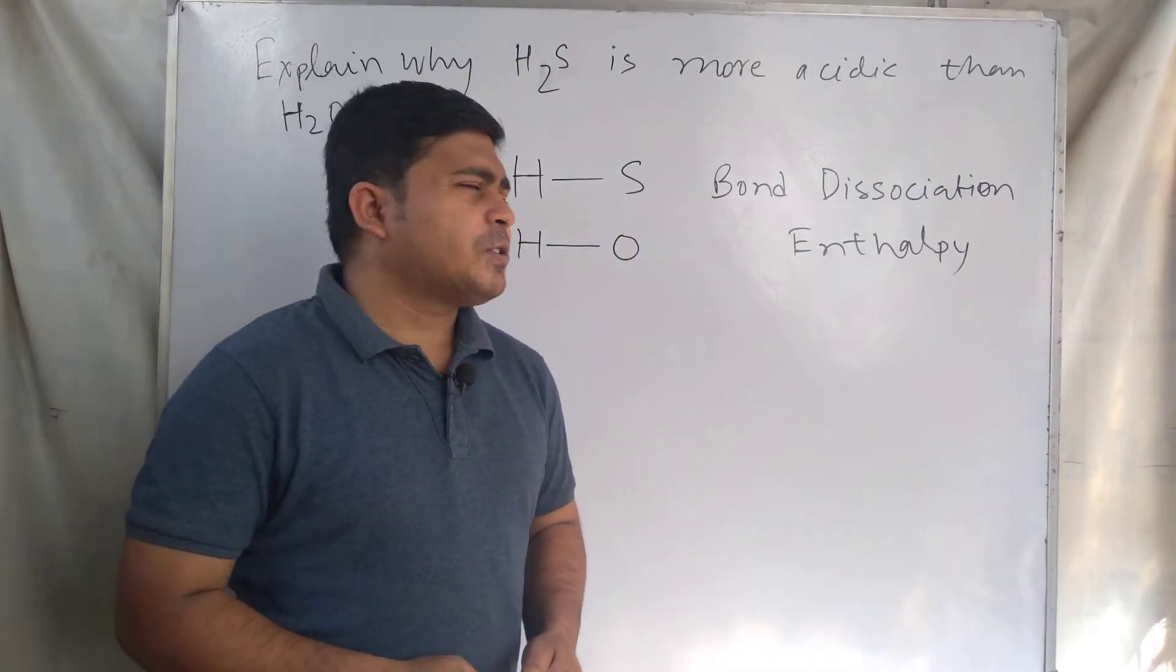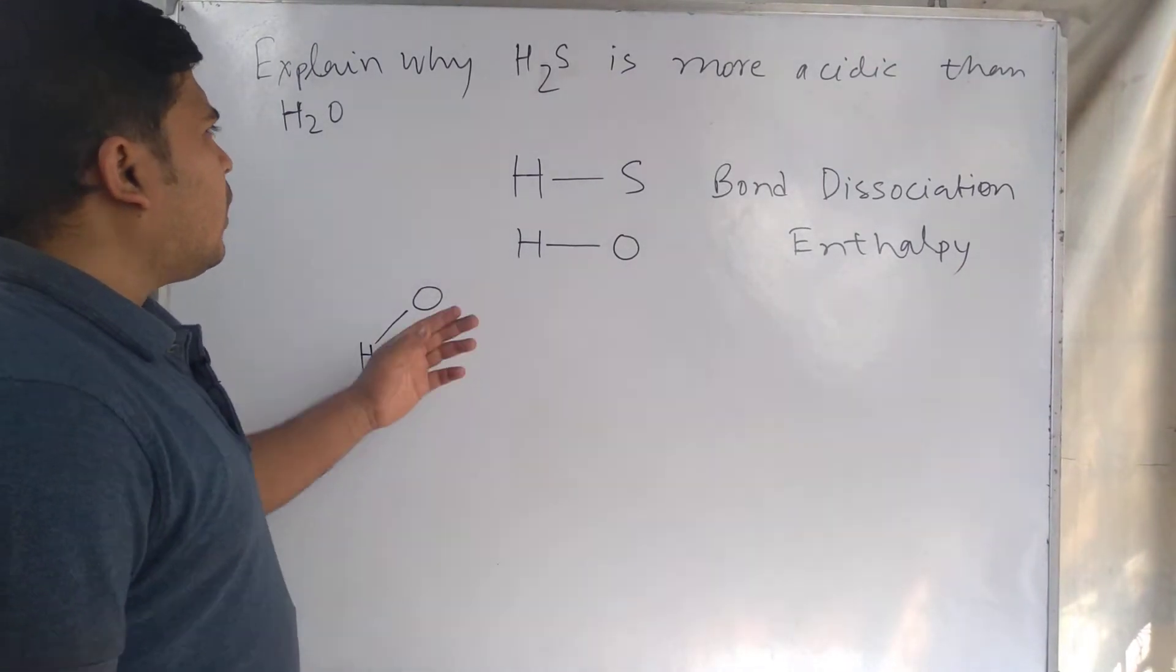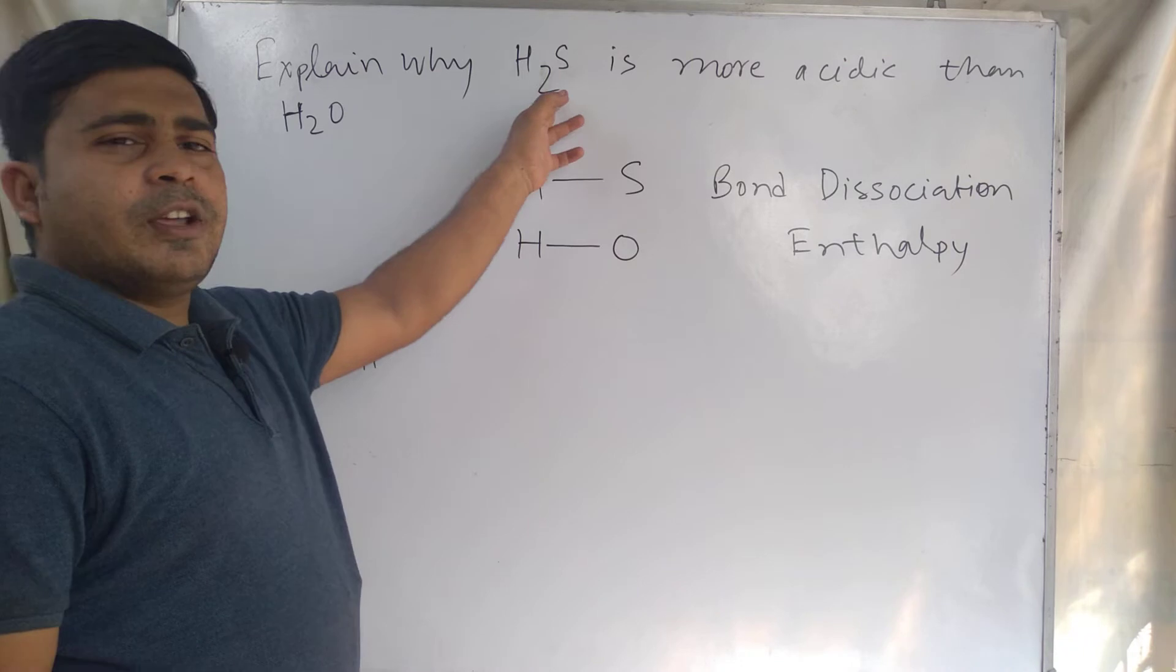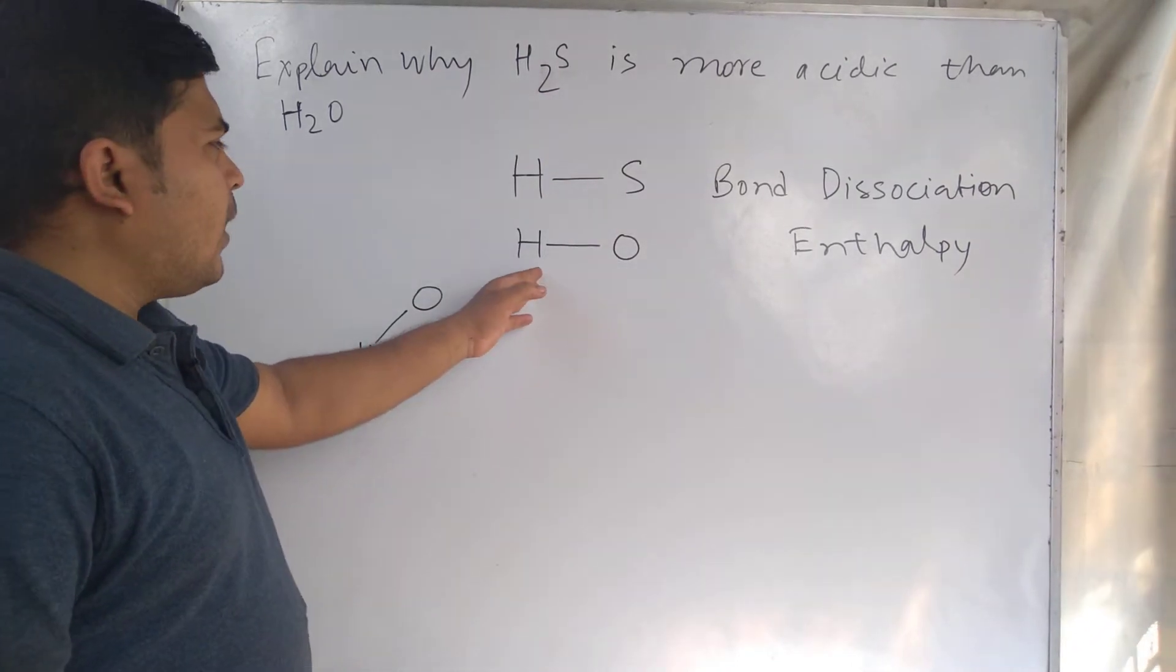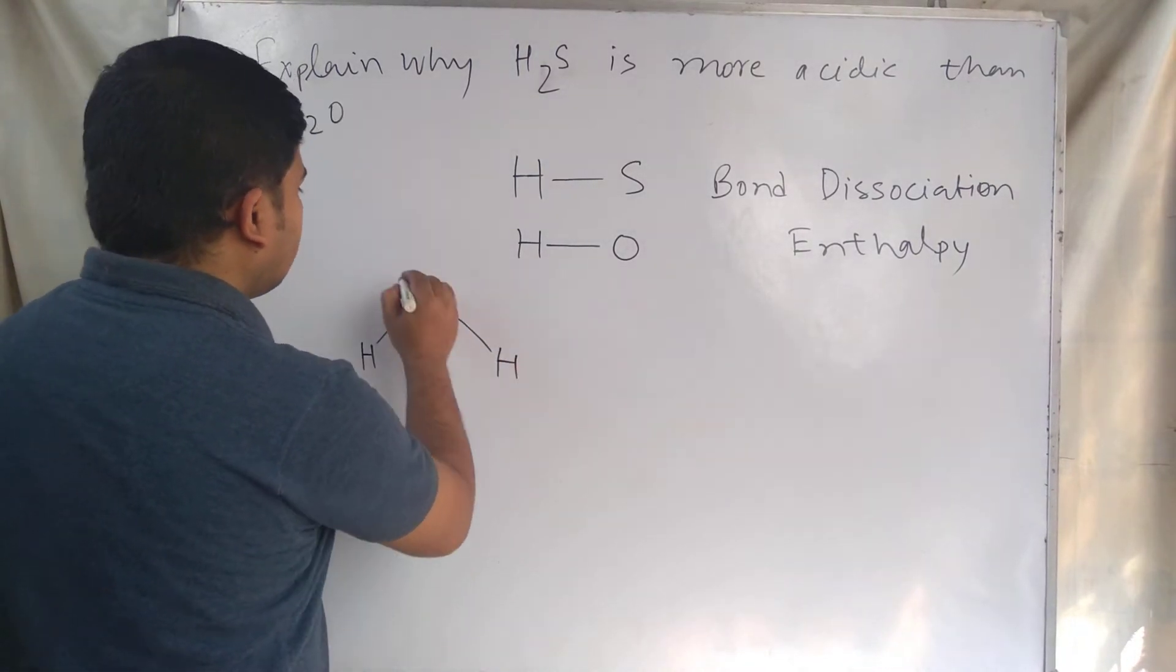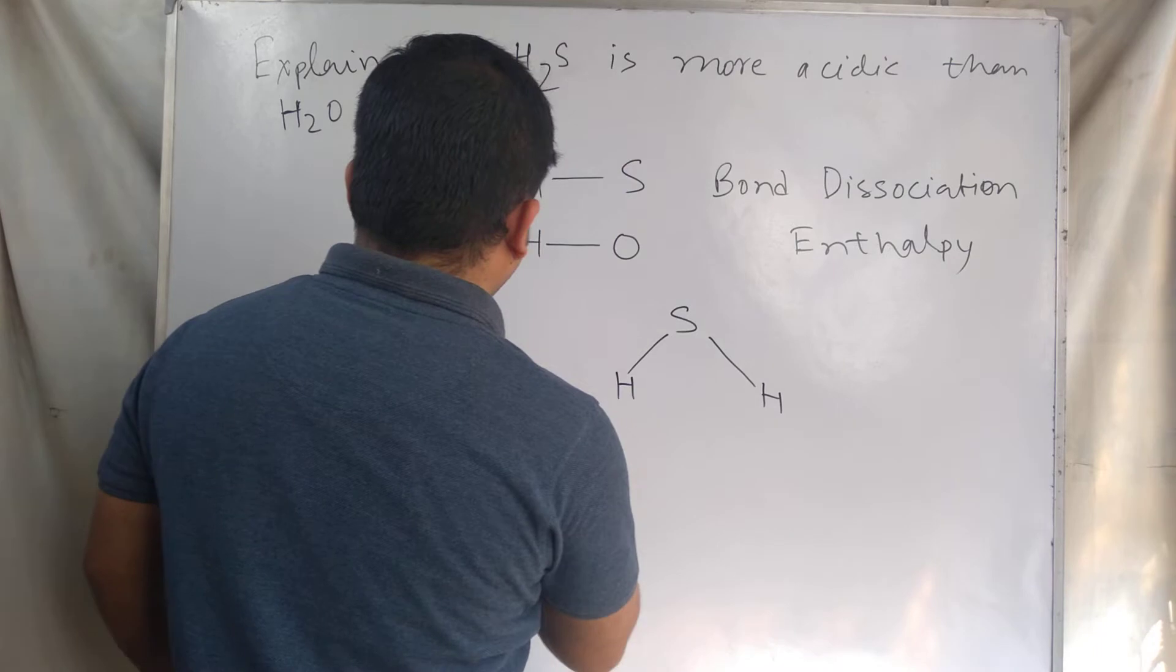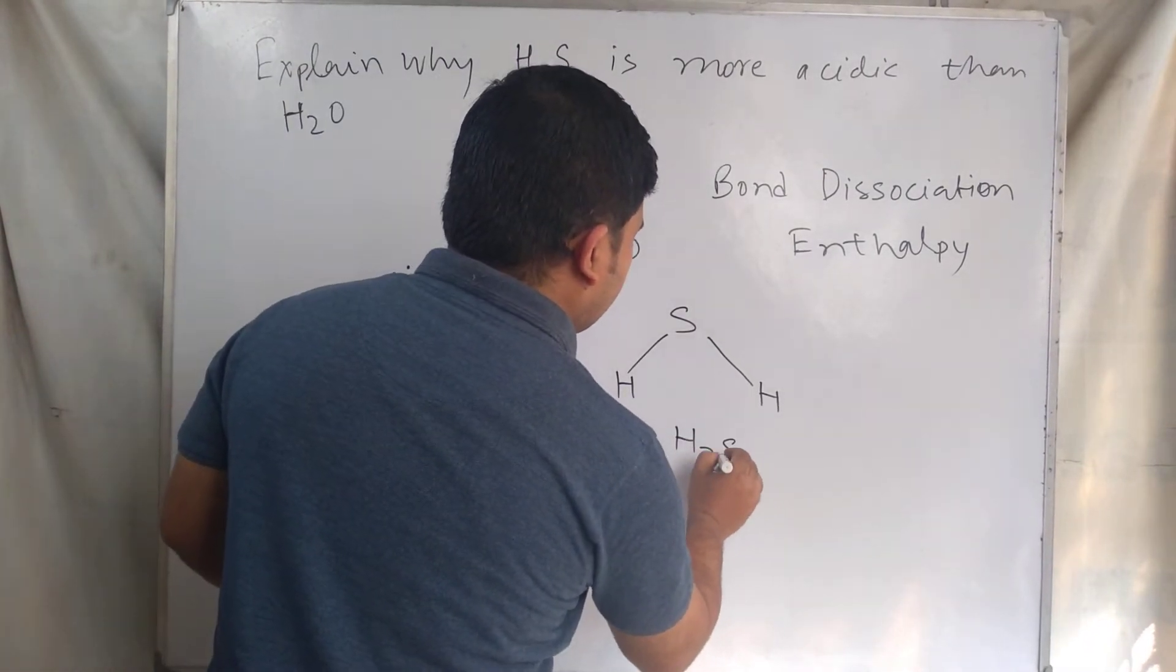Let's start discussion about this question. In water and in H2S, the H-S bond is present in H2S and the H-O covalent bond is present in water. This is the structure of water and this is the structure of H2S. This is water and this one is H2S.